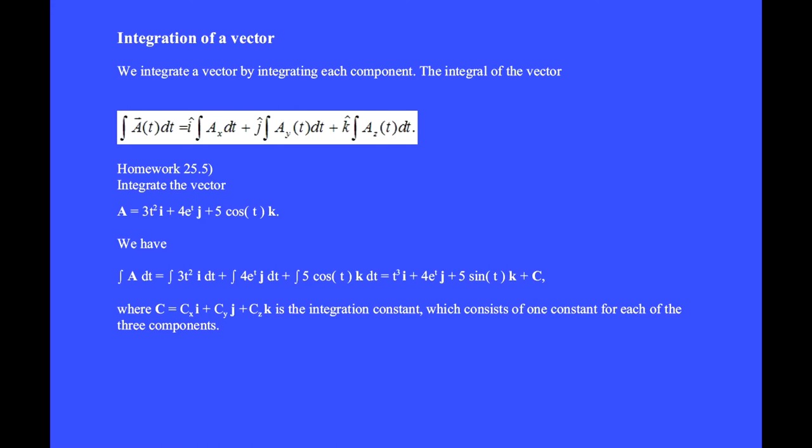In problem 2.5, integrate the vector a equals 3t squared i hat plus 4e to the t j hat plus 5 cosine of t k hat.